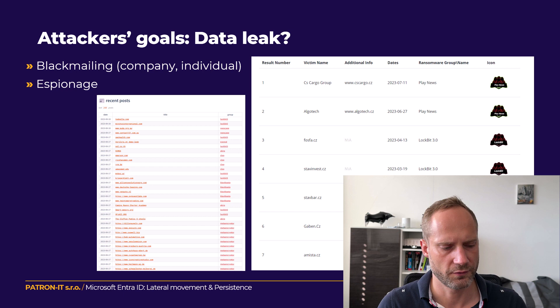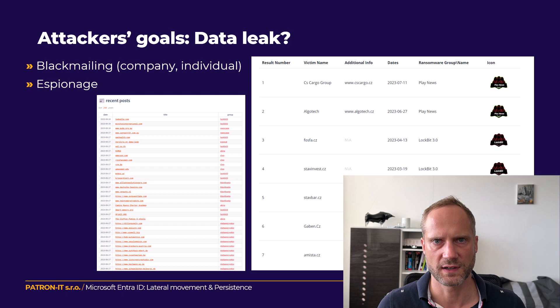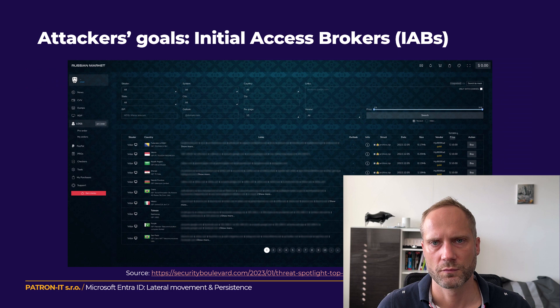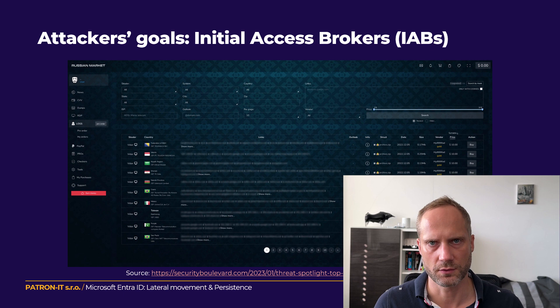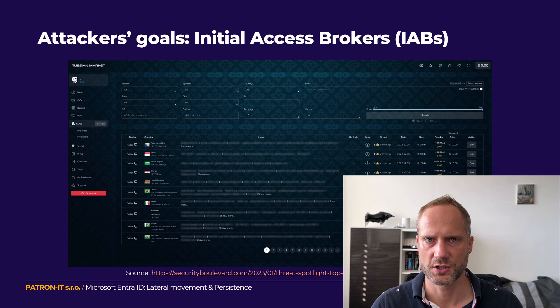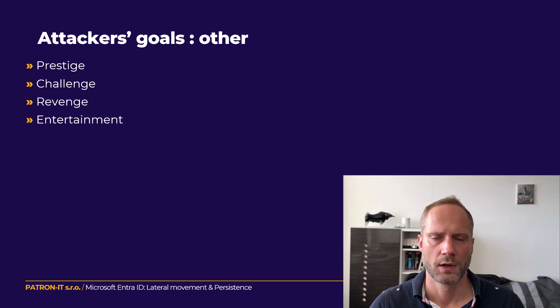For some companies, their data can be interesting to APTs or government hackers, who will buy the access or stolen data. There are also criminals specialized as initial access brokers — they break into a company but don't do anything there. They don't exfiltrate data or modify configuration; they just have the credentials and access to accounts, and then sell that on forums. These are called initial access brokers.